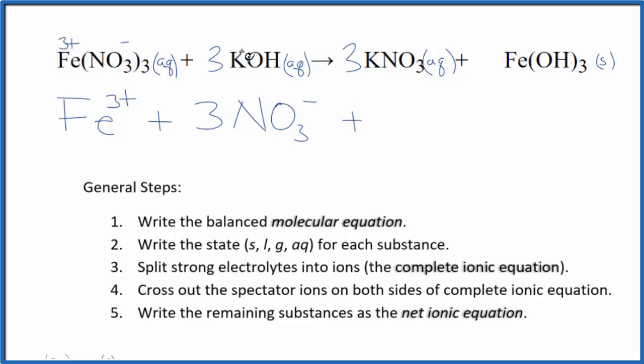For potassium hydroxide, potassium is in group 1 on the periodic table. That's 1 plus. Hydroxide is always 1 minus. 3 potassium ions and then 3 of those hydroxide ions. And these are the reactants. For the products, we have 3 potassium ions again and 3 nitrate ions.